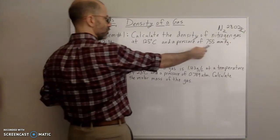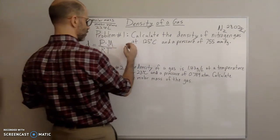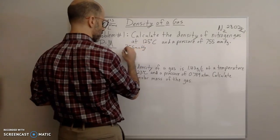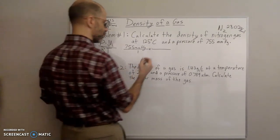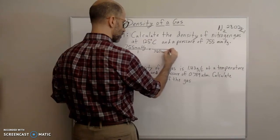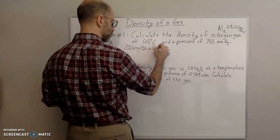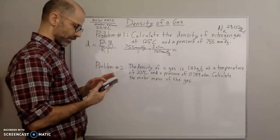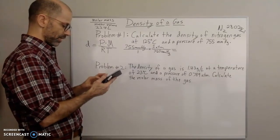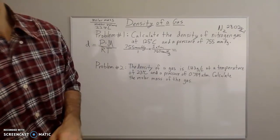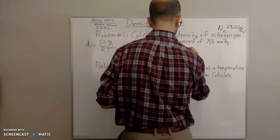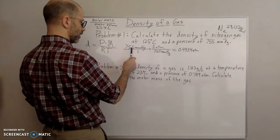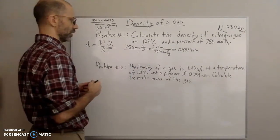They're giving us the pressure, so we need to convert that to atmospheres because of our R value. That's going to be 755 millimeters of mercury over one, and then 760 millimeters of mercury for every one atmosphere. Millimeters of mercury cancel out, and we calculate 755 divided by 760 equals 0.9934 atmospheres. We have three sig figs here and three sig figs there, so our answer is going to be in three sig figs.